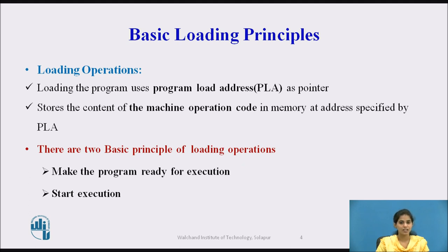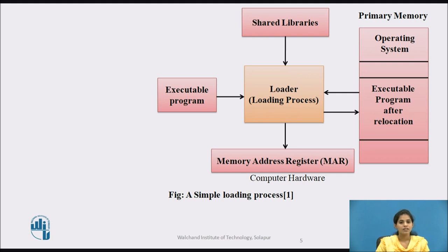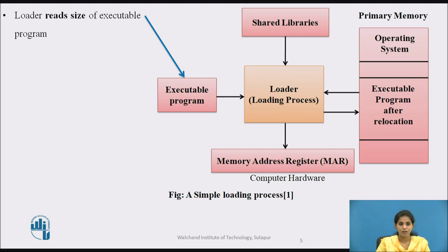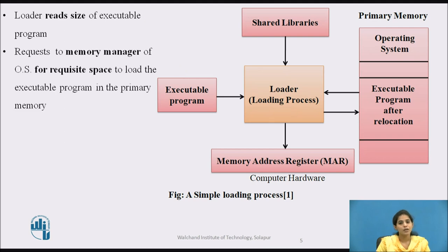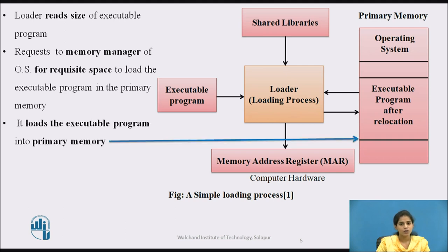This process is shown in the figure, which shows the simple loading process of the program. The loader first reads the size of the executable program from the header record of the file. Then it requests the memory manager of the operating system for requisite space to load the executable program in the primary memory. When the loader and the operating system are both in the primary memory, then the loader loads the executable program after completing the proper relocation.